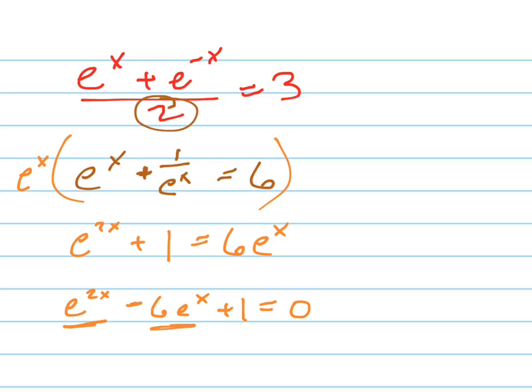Because now if I substitute u in here, I'm going to let u equal e to the x. If I let u equal e to the x, I get u squared minus 6u plus 1 equals 0.